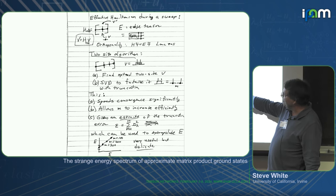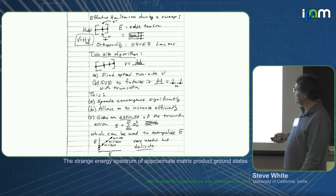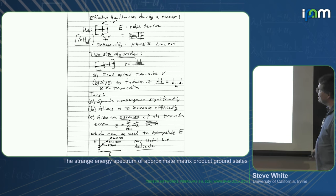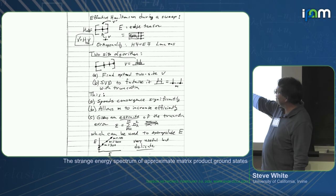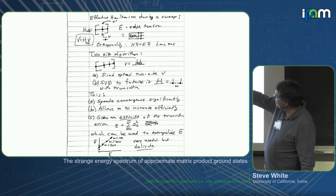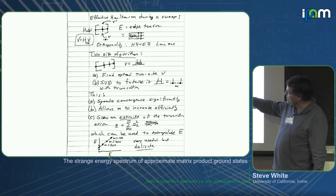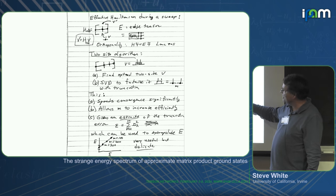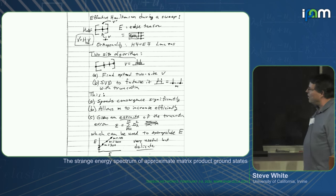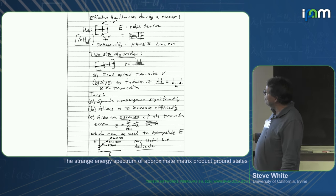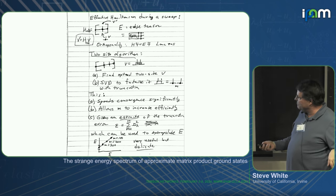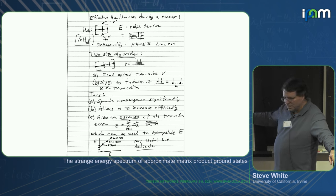In practice, we usually do the two-site algorithm, although there's been a gradual improvement of the one-site algorithms to make them more competitive. There's a cost to doing this because you have some extra degrees of freedom. It looks like the same sort of Hamiltonian but you leave open two sites in the center. This speeds convergence significantly, prevents the system from getting stuck in local minima for many systems, and allows us to increase the bond dimension efficiently.